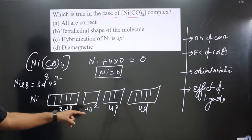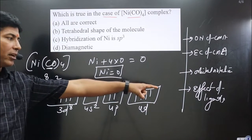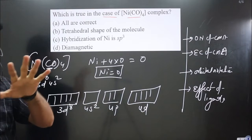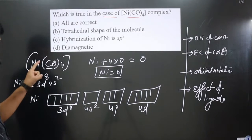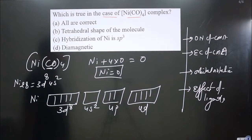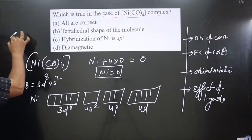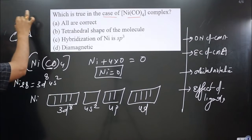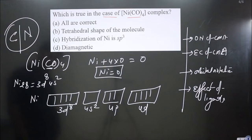Before filling these electrons in the orbitals, we consider the effect of ligand for pairing of electrons. Carbonyl is a very strong field ligand. In general, ligands starting from carbon and nitrogen are considered to be strong field ligands.